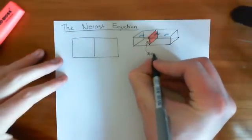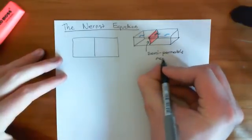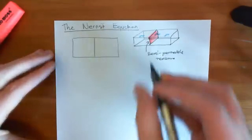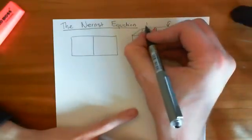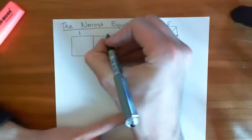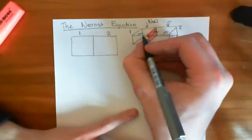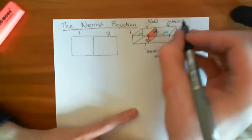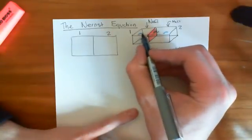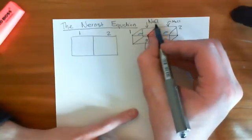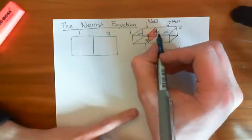So we put in that semi-permeable membrane. Now what we're going to do is dissolve salt in both compartments. I'm going to put loads and loads of salt into compartment one — lots and lots of salt — and we're going to put hardly any salt into compartment two, but we do have some salt in both. And this semi-permeable membrane is not going to allow water to move between the two compartments, and it's not going to allow chloride ions to move between the two compartments. But it is going to allow sodium ions to move between the two compartments.